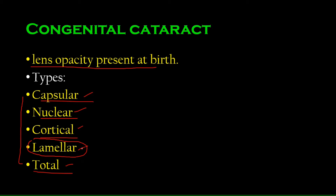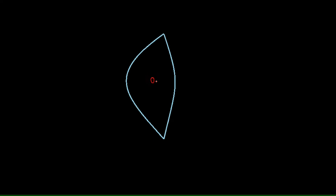The word lamellar means 'layer.' So lamellar cataract is a kind of cataract where one or a few specific layers of the lens become opaque. The structure of the lens is like an onion — if you cut an onion in half, you see concentric circles. Those are the layers, called lamellae.